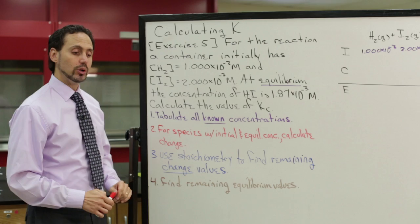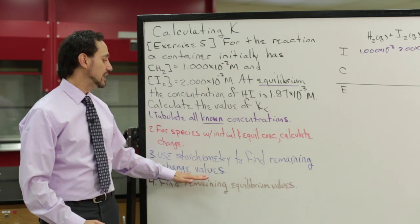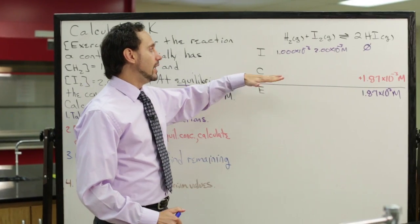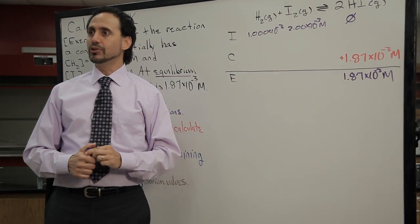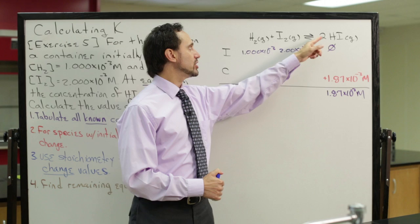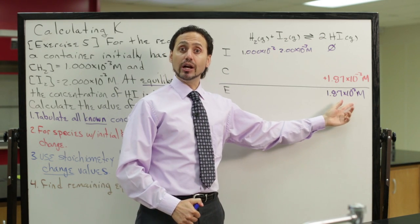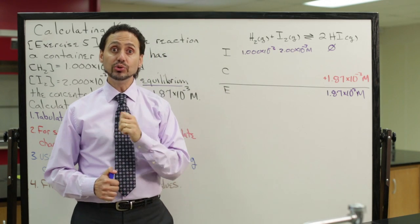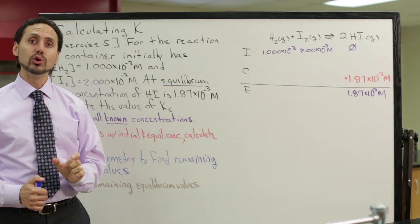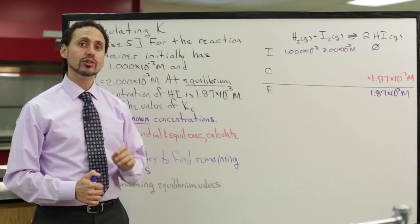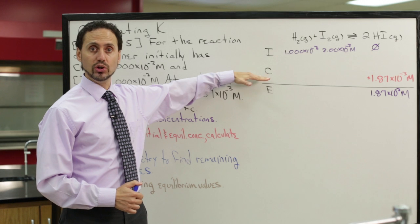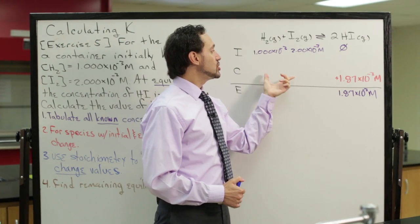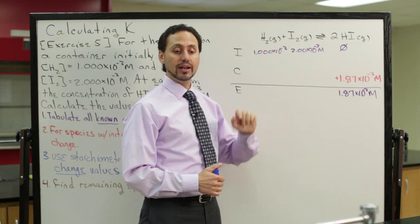Let's move to step three — we'll use stoichiometry to find the remaining change values. This is really important: the only row of the ICE table where stoichiometry and mole ratios can be used is the change row. Do not apply stoichiometry in the initial or equilibrium rows. So let's look at the change amounts for hydrogen gas and iodine gas.